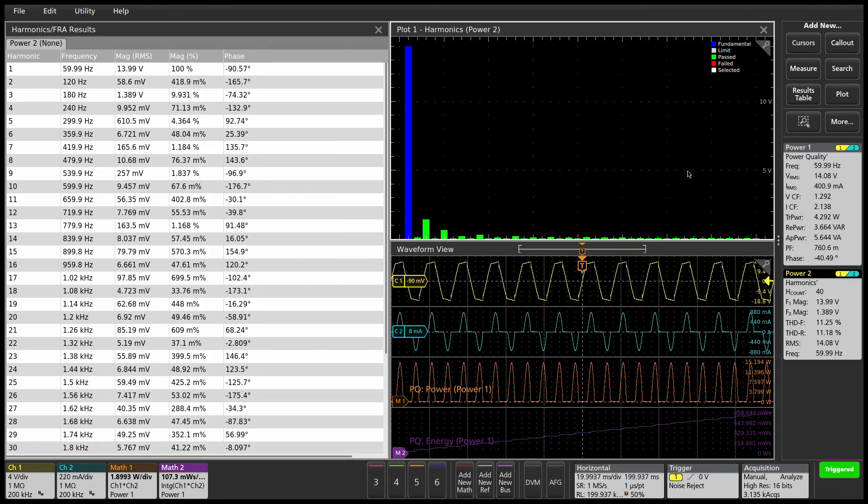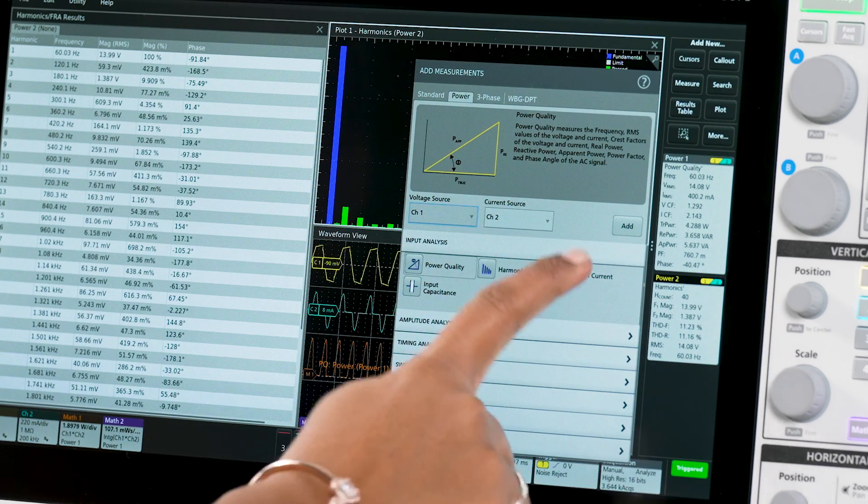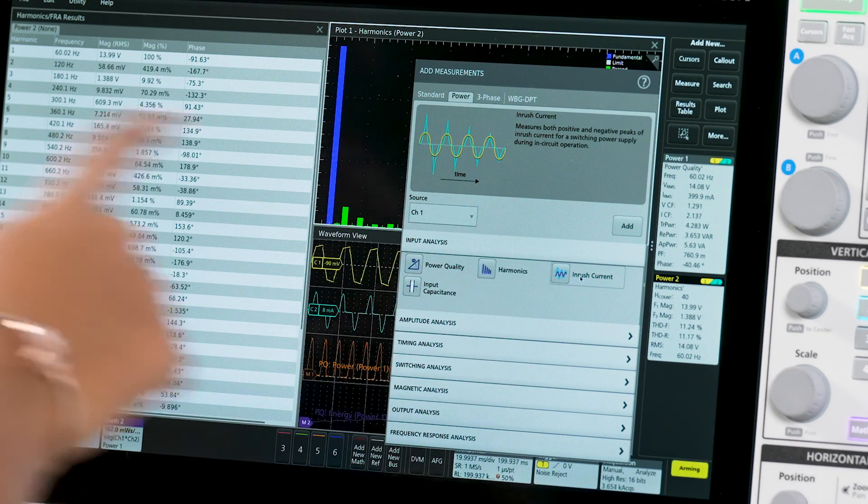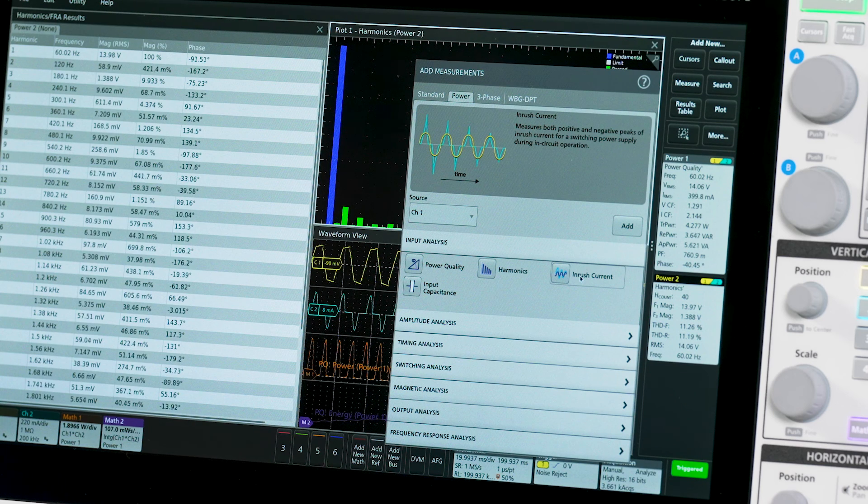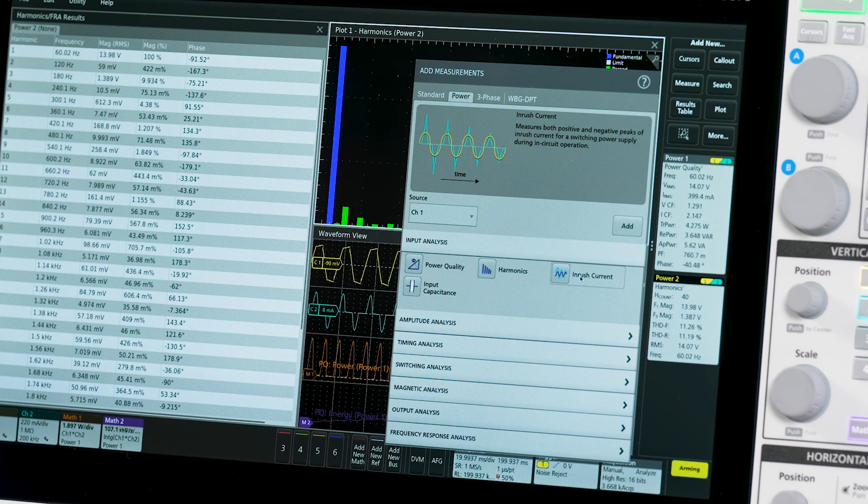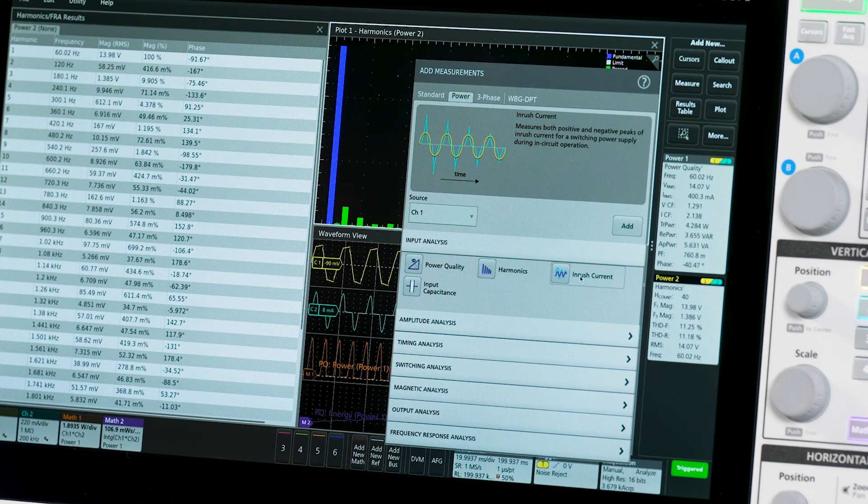The instantaneous inrush current is often measured to verify that a power supply's input capacitors charging current does not exceed the maximum current rating for the capacitor or any other components in the input path.